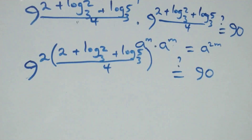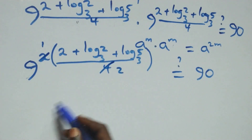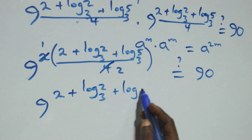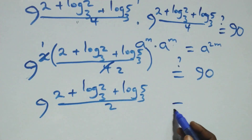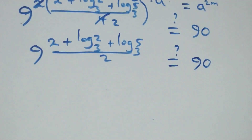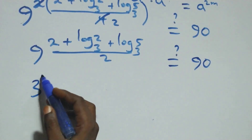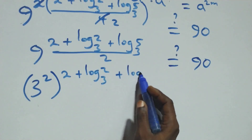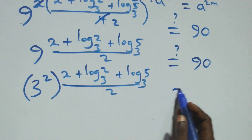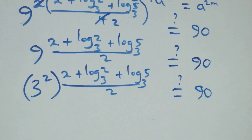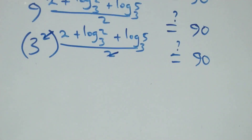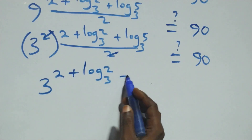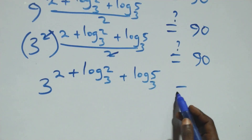From here we can write 9 as 3 squared, and this power multiplies: two times the power gives 9 raised to power (2 + log₃2 + log₃5) / 2, which should equal 90. Then writing 9 as 3 squared again, the powers multiply: 3 raised to power (2 + log₃2 + log₃5), all over 2, equals 90. The 2's cancel each other, leaving 3 raised to power (2 + log₃2 + log₃5) equals 90.